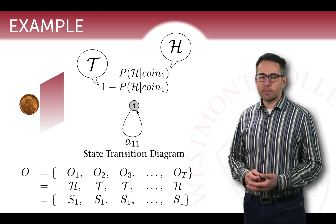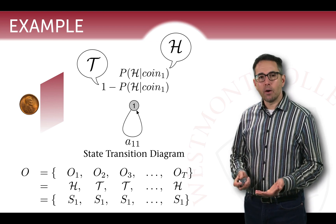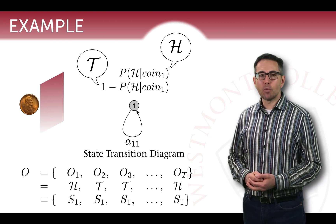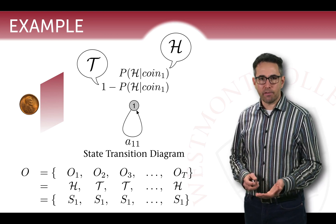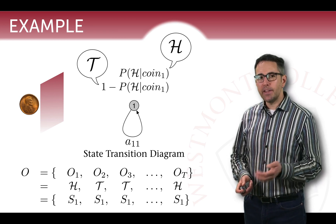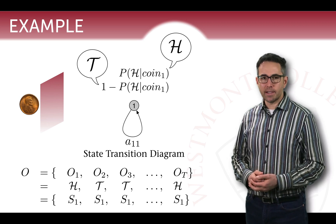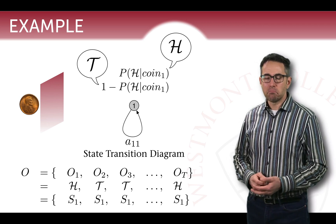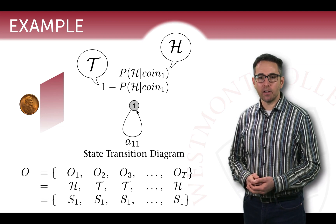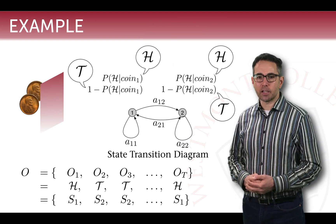Because this coin is being flipped behind a curtain, one thing we don't know is whether there's one coin or two coins being flipped. Perhaps one of those coins is fair, but the other is not. When we hear heads and tails called out, we don't know which coin is necessarily being flipped. This is a different possible interpretation of what's happening behind the curtain, and we can model it using an extension of this model.